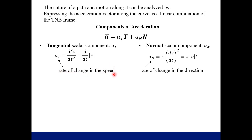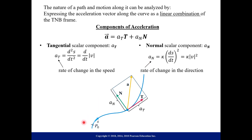These components are meaningful because of what they represent. The tangential component is the rate of change in the speed of your object on your path, and the normal component is the rate of change in the direction. In the visual, at any point on the blue path we have our unit tangent vector and unit normal vector, and our acceleration vector is the sum of scalar multiples of them. The scalar a_T makes T slightly longer than 1 since T is a unit vector.